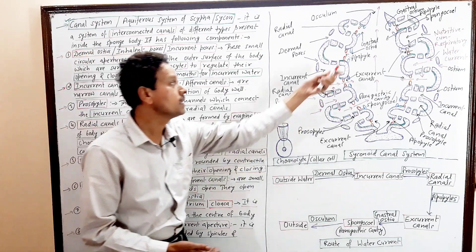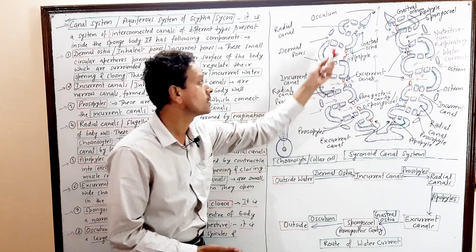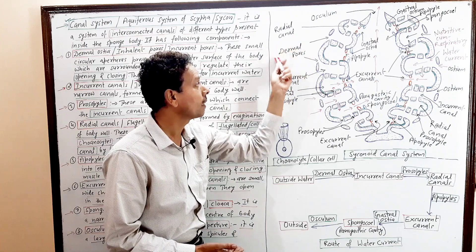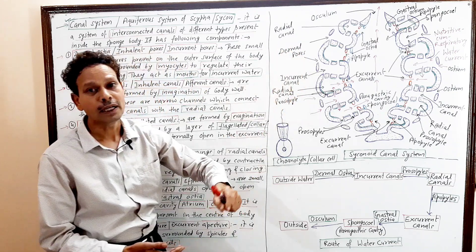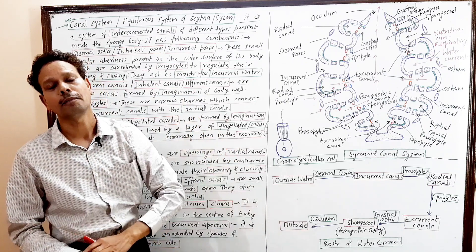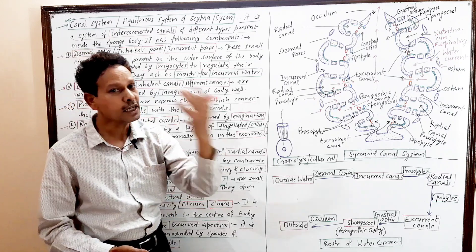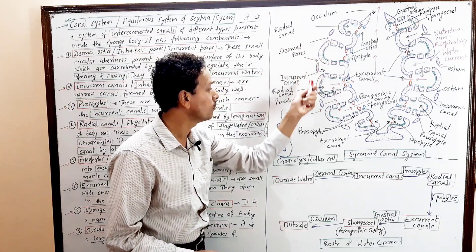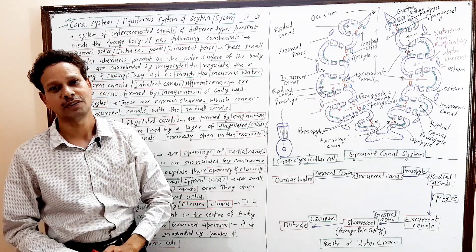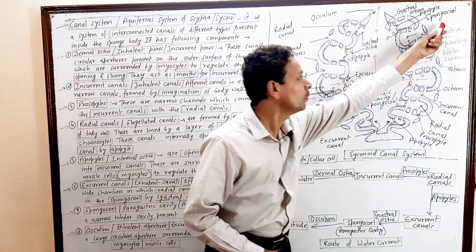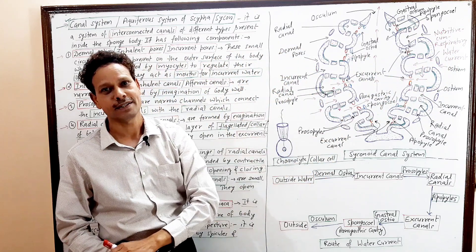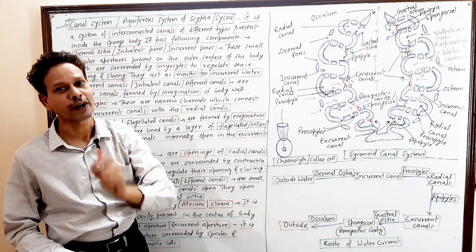Sponges are pore-bearing animals. Their outer surface is porous, and on this outer layer numerous pores are there. These pores are called Dermal pores or Dermal Ostia. These are inhalant pores, these are incurrent apertures. Through these apertures on the outer surface, this nutritive cum respiratory cum reproductive water current enters.